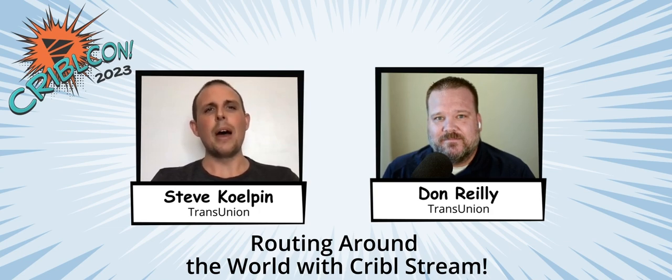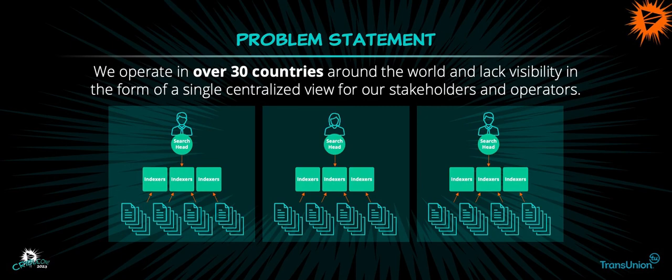Today we are going to talk about routing data around the world with Cribble Stream. We operate in over 30 countries around the world, very geographically dispersed — I think we have companies on every single continent on the planet at this point. Some of those are also in the developing world where access to the internet isn't equal to the rest of the planet, and we do have quite a bit of bandwidth concerns.